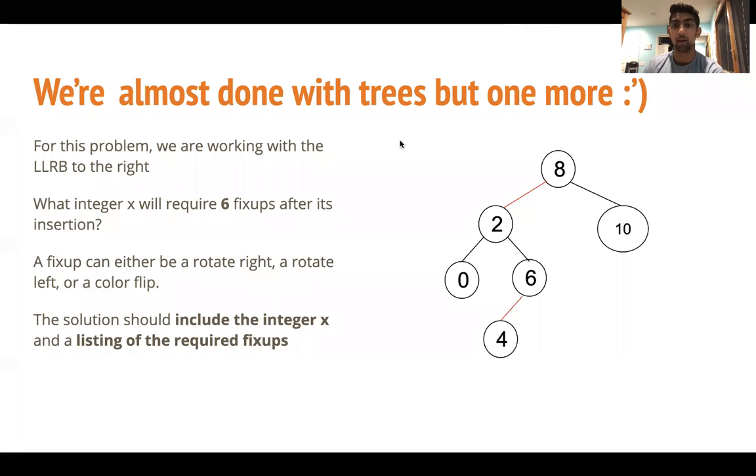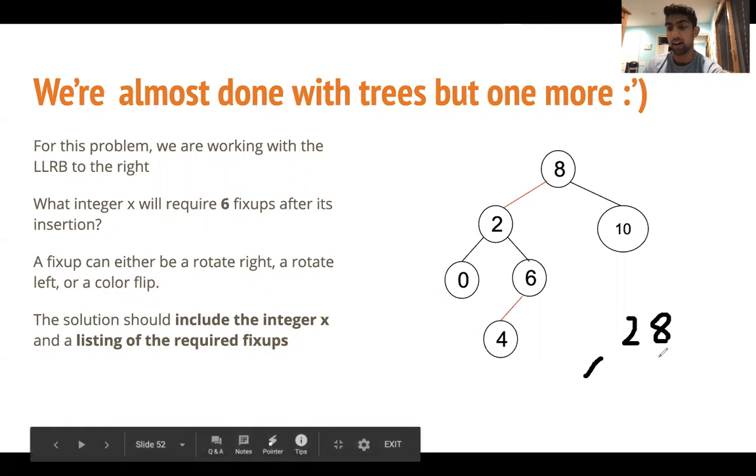So if we were to look at the corresponding 2-3 tree, we see that the top root contains 2 and 8. And then we have 0, 4, 6, and then 10.